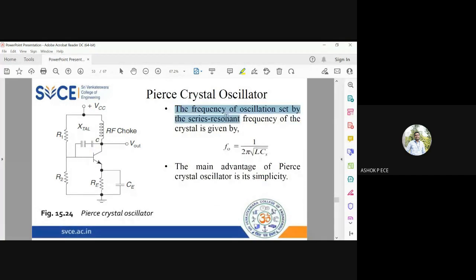The frequency of oscillation is given by F0 = 1/(2π√(L*Cs)), and this L and Cs are coming from the crystal oscillator parameters. The crystal oscillator has an equivalent circuit with L, Cs, R, and Cp. So this F0 is given by 1/(2π√(L*Cs)). The crystal provides the positive feedback.